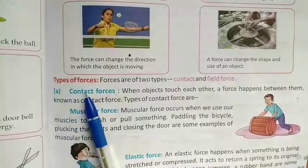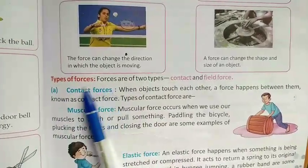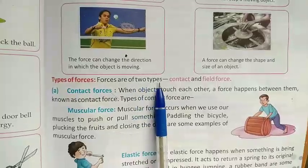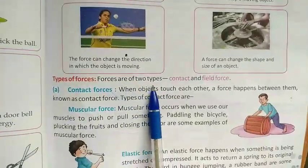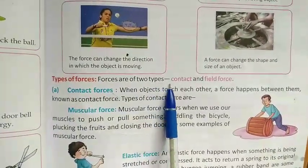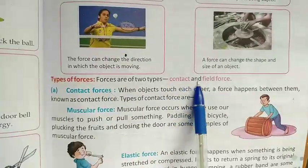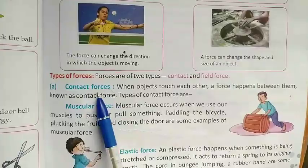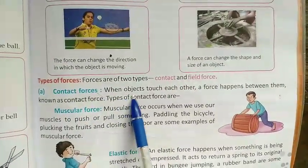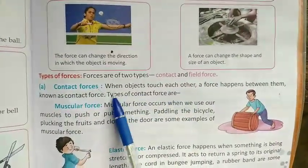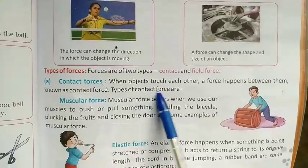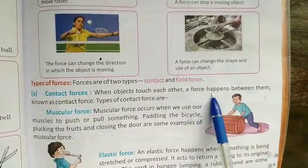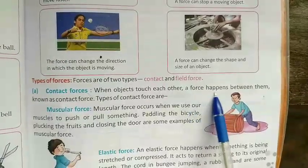Next are the types of forces. Forces are of two types: contact forces and field forces. Contact forces happen when objects touch each other and a force acts between them.